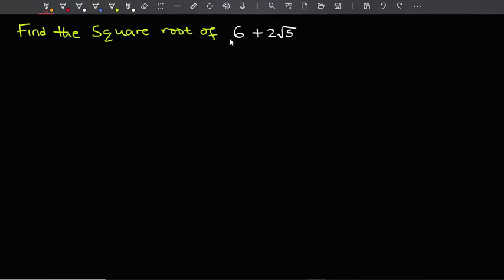Hello, so let's find the square root of 6 plus 2 root 5. This right here is an irrational number and we want to find its square root. Now there are several ways of doing this, but I'm going to use probably the simplest one I can.